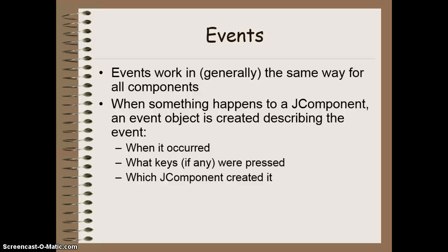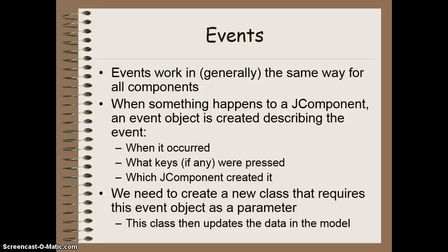Basically, when something happens to a JComponent — when I press enter or click a button in it — an event object is created that describes that particular event. That object has information in it like when did it occur, what keys were pressed when I did it (so control something or alt something), and which JComponent fired that event. We need to create a class that is going to have that event object as a parameter.